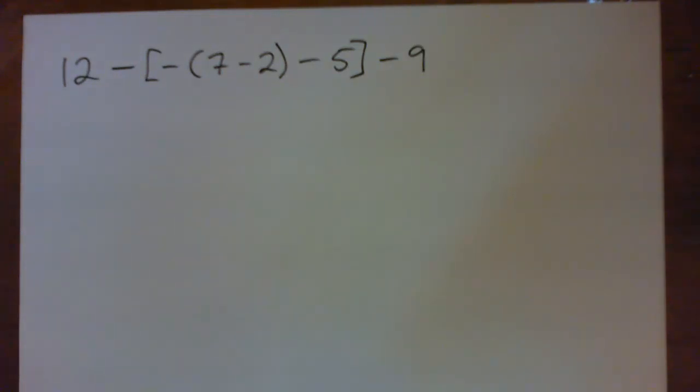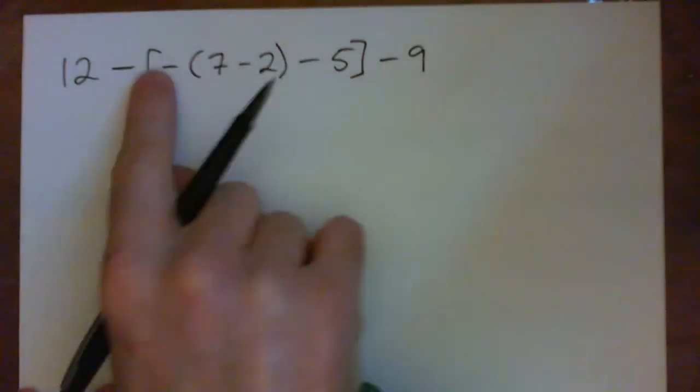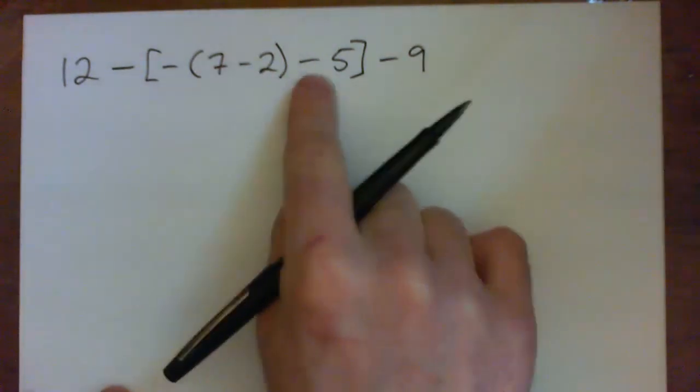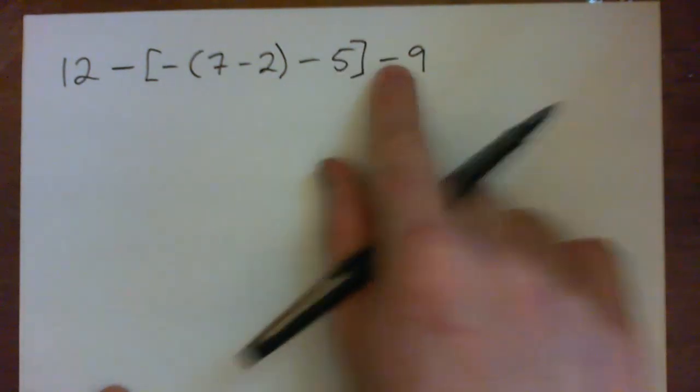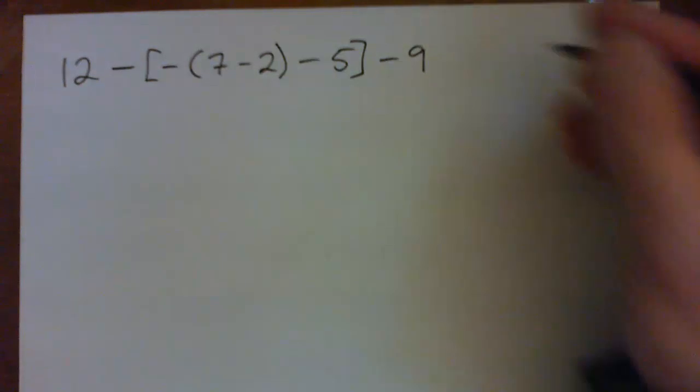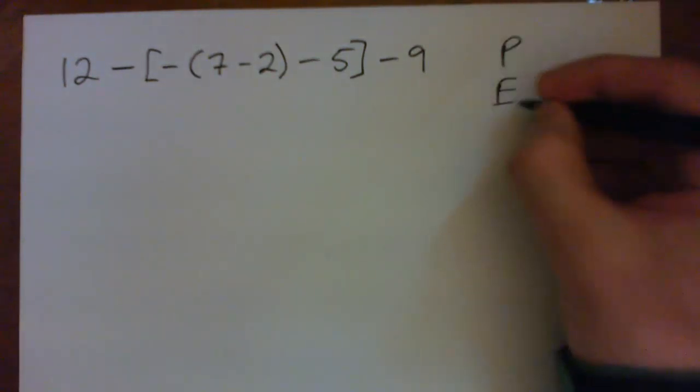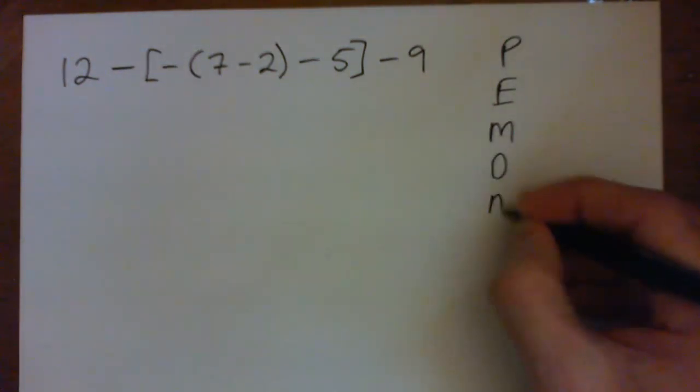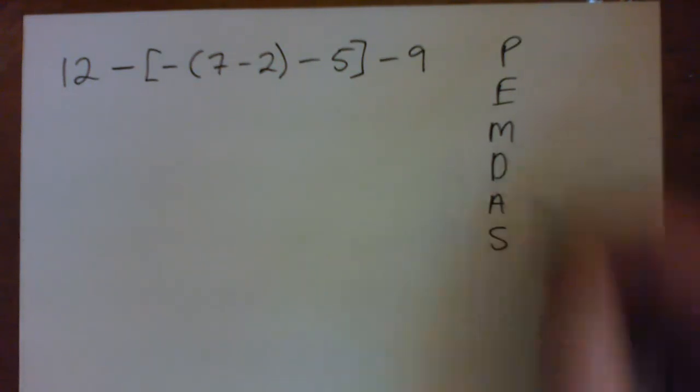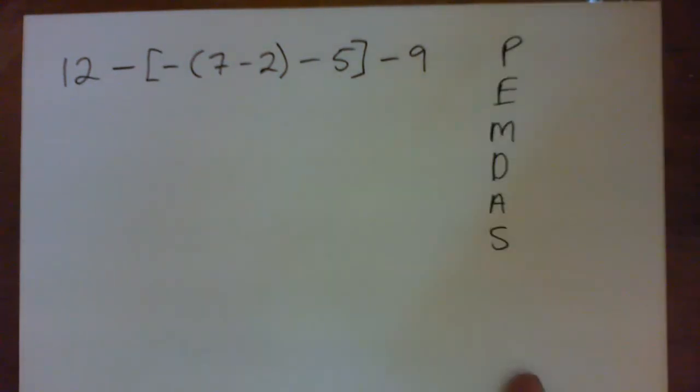Alright, let's go over this problem. It's 12 minus in square brackets negative 7 minus 2 minus 5, close square brackets, and then minus 9 at the end. So we want to be thinking about PEMDAS a little bit here, right? We're trying to calculate an expression, so we have to think about our order of operations.